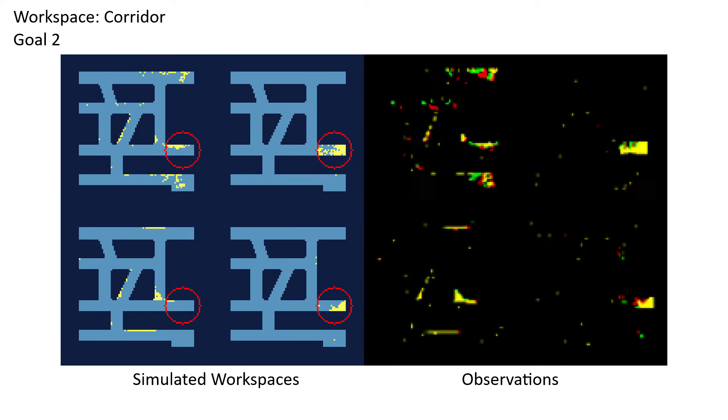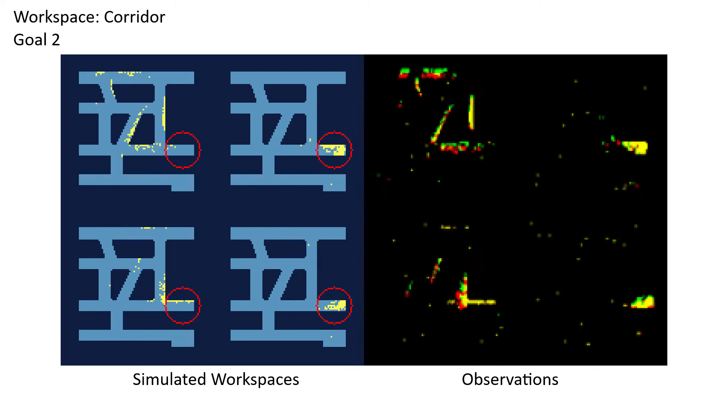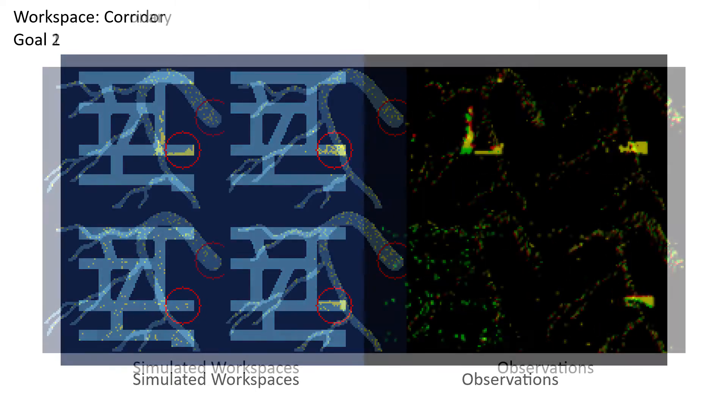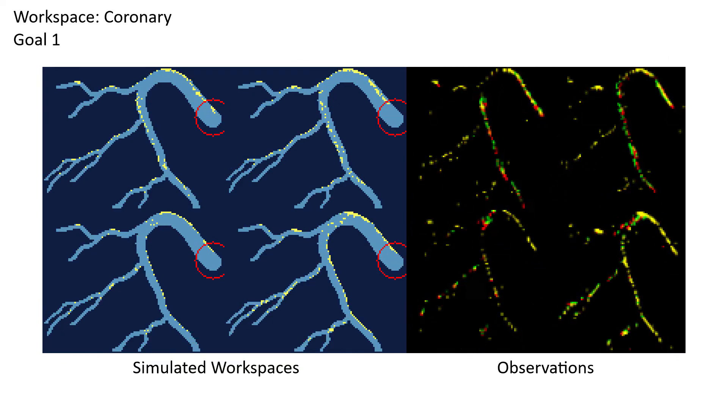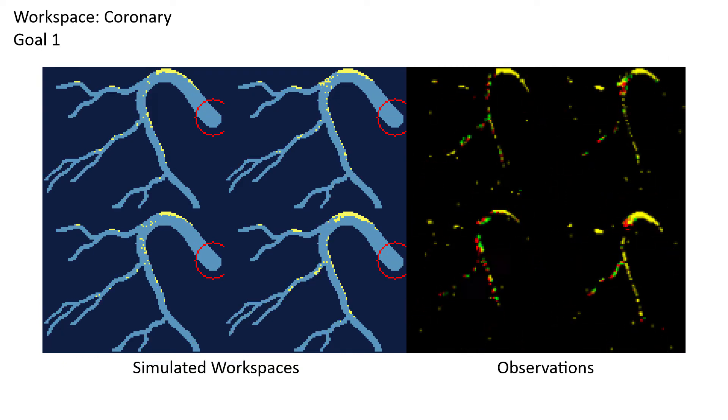On the right is the observation data the agent receives. Non-black pixels are particles. The observation uses frame stacking, so green shows new locations for particles, red shows old locations, and yellow are particle locations in both frames.